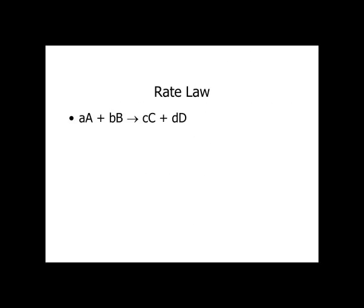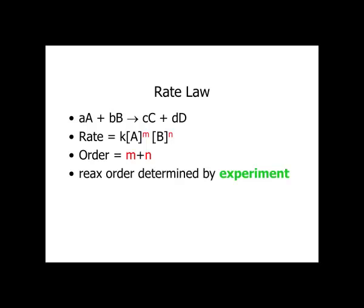The rate law for a hypothetical reaction — A moles of A reacting with B moles of B to form C moles of C plus D moles of D — is in general equal to k times the concentration of A raised to a power m, times the concentration of B raised to a power n. The order is the sum of the exponents, m plus n. The reaction order is determined by experiment; you cannot get it from the stoichiometry.